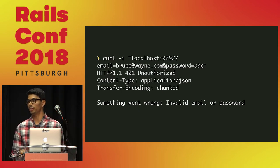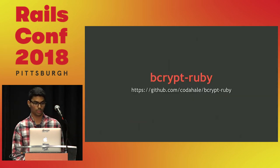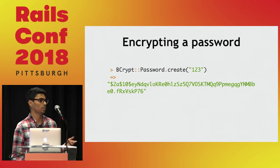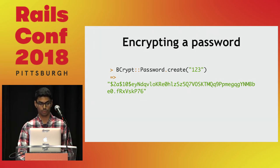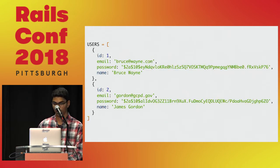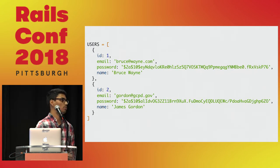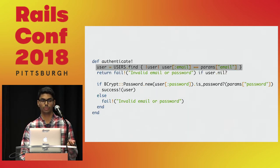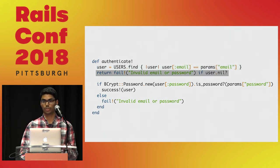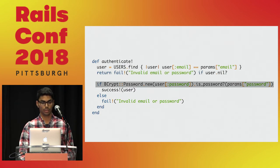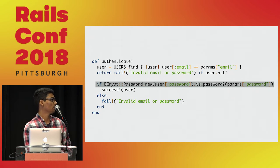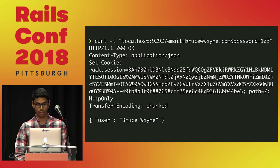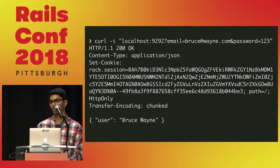Those plain-text passwords are bad, so let's add some encryption using the bcrypt Ruby gem. We just call the create method on the Password class and pass a string. We update our users array with the bcrypt-hashed passwords, and we change our strategy to perform authentication in two steps — like the Devise strategy: first we try to find a user by email, and if the user doesn't exist we fail right away. If the user does exist, we check whether the password is valid by calling is_password? from the bcrypt gem, and if it returns true we call success. Everything still works, except now we're using encrypted passwords.